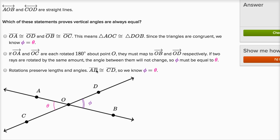Let's do one more of these. So they're telling us that line AOB, and they could have just said line AB, but I guess they wanted to put the O in there to show that point O is on that line, that AOB are collinear, and COD are straight lines. Which of these statements prove vertical angles are always equal? So vertical angles would be the angles on the opposite sides of an intersection. So for example, angle AOC and angle DOB are vertical angles, and if we wanted to prove that they are equal, we would say their measures are going to be equal, so theta should be equal to phi.